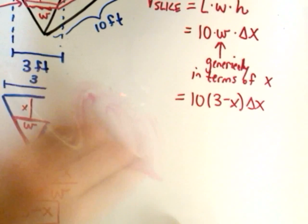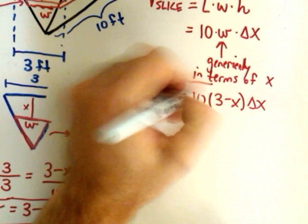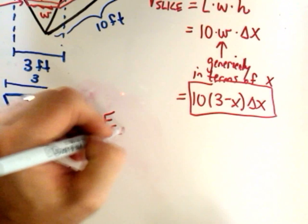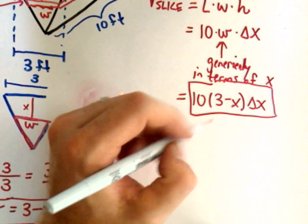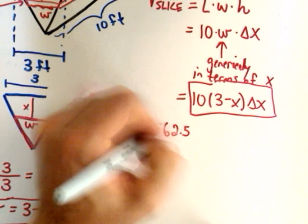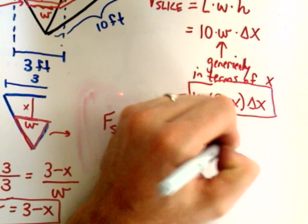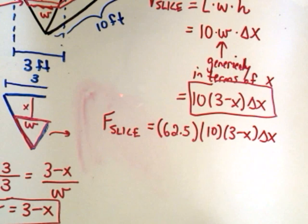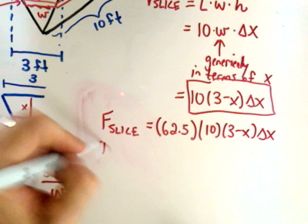So let me erase this stuff. Okay, so now we've got the volume of the slice generically. The force on this slice of water, since my units are in feet, we just take 62.5 and multiply it by 10 times 3 minus x times delta x. Obviously, you could simplify this down, but I'm kind of leaving it broken up just to illustrate where all the numbers are coming from.